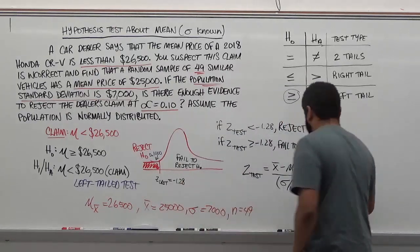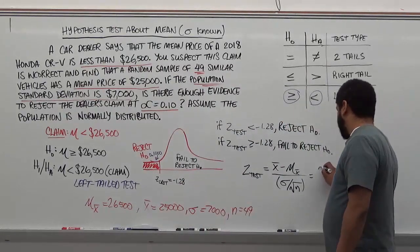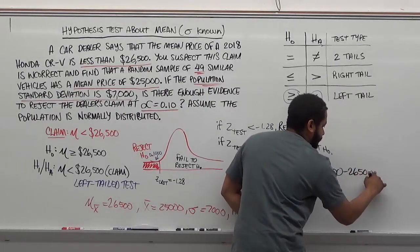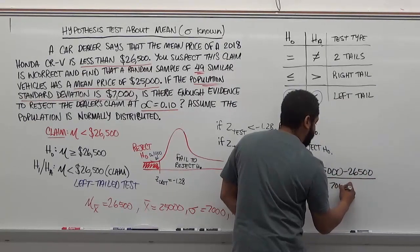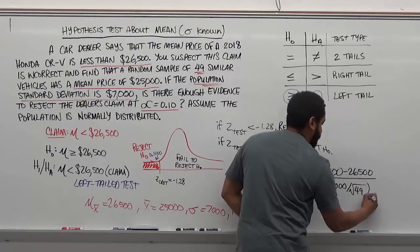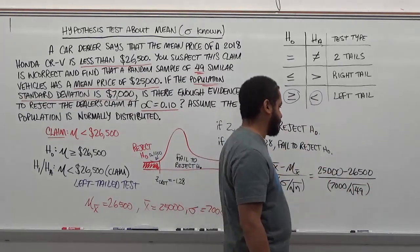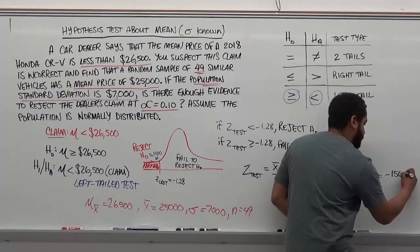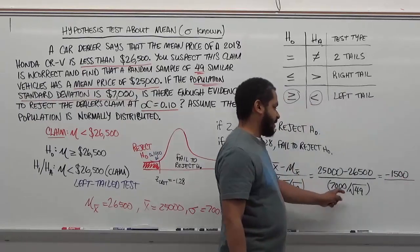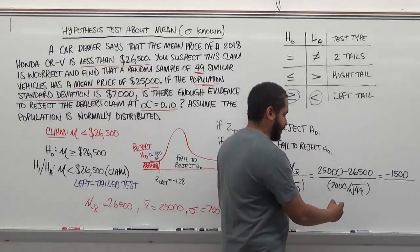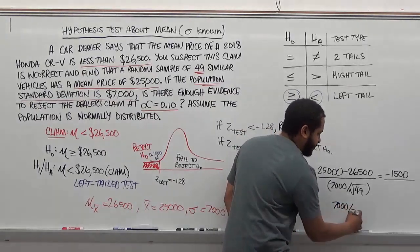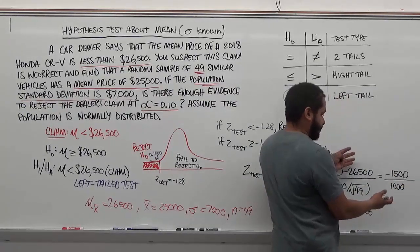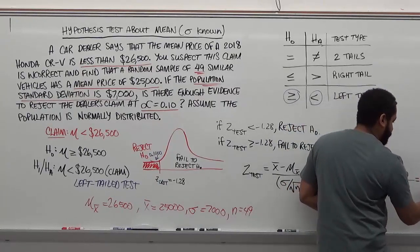Let's plug in and solve. The sample mean is 25,000 minus 26,500 over 7,000 over the square root of 49. For the top, 25,000 minus 26,500 is negative 1,500. On the bottom, 7,000 divided by the square root of 49. The square root of 49 is 7, so 7,000 divided by 7 gives us 1,000. When we divide these two, which you should do with a calculator, gives you negative 1.5.